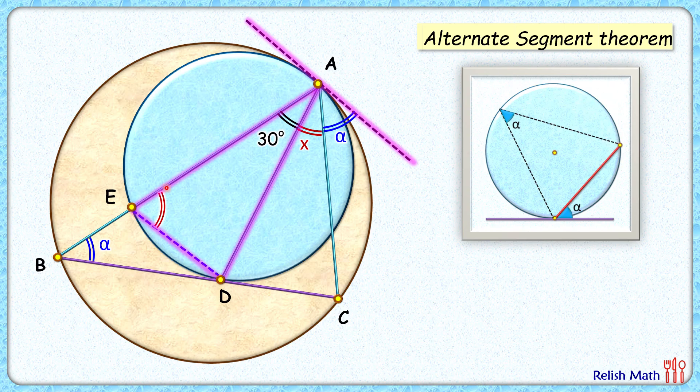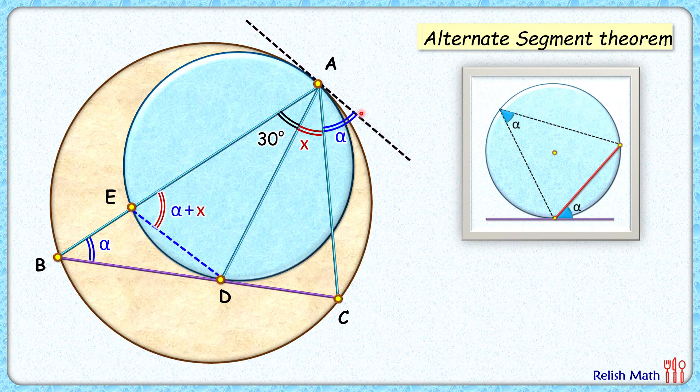Now if you look at the triangle EBD, with respect to triangle EBD, this angle alpha plus x is the exterior angle. And by exterior angle sum property, this angle will be x degrees. Now again, what is the value of x?